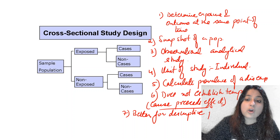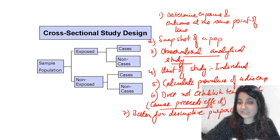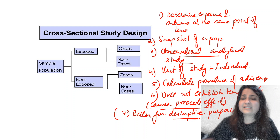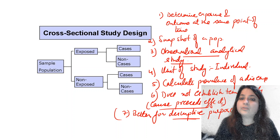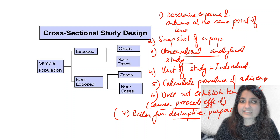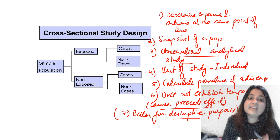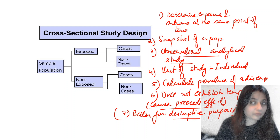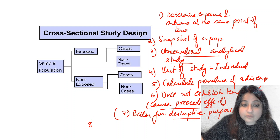Although cross-sectional study design is a type of observational analytical study, it is better for descriptive purposes. For example, if I come to your class and ask how many of you drink, how many don't exercise, how many have raised BP — I am determining exposure and outcome at the same time, so I cannot say that not exercising caused high BP.